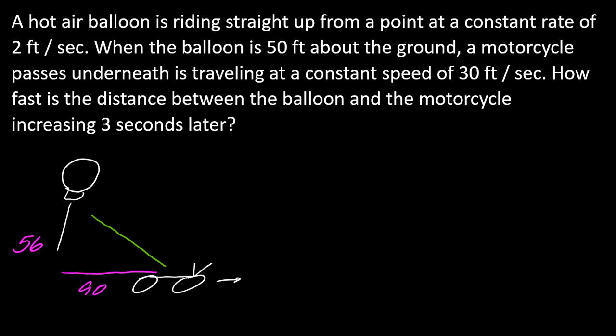I can use the Pythagorean theorem for the shape that's been created in this situation. So that's a squared plus b squared equals c squared. Anytime I come up with a physical situation, I want to think about what quantities are changing.